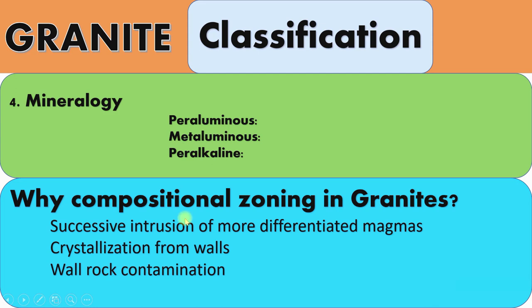Granites have compositional zoning, and there are particularly three causes. First, successive intrusion of more differentiated magmas. Second, crystallization from the walls inward. Third, wall-rock contamination. Due to these three causes, compositional zoning can be found in granites.